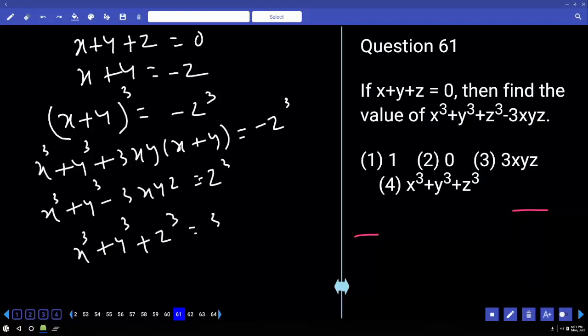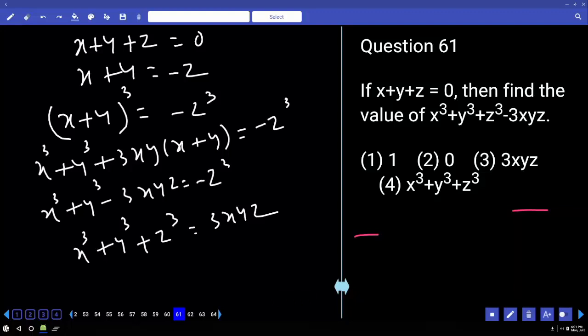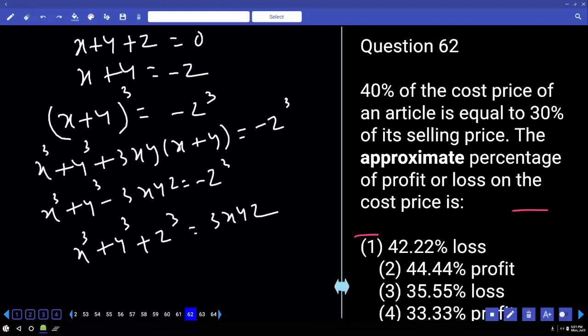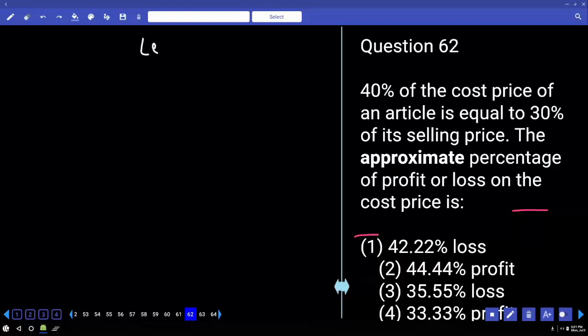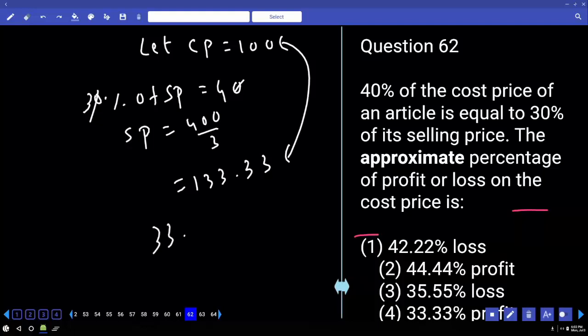62. Right. 40 percent of the cost price of an article is equal to 30 percent of the selling price. The approximate percentage of profit or loss on the cost price is right. Let CP equal to 100. According to the problem, 30 percent of SP is equal to 40 percent of CP. How much? 40. 0, 0 cancel. SP is equal to 400 by 3. 133.33. Now observe the difference. 33.33 percent.